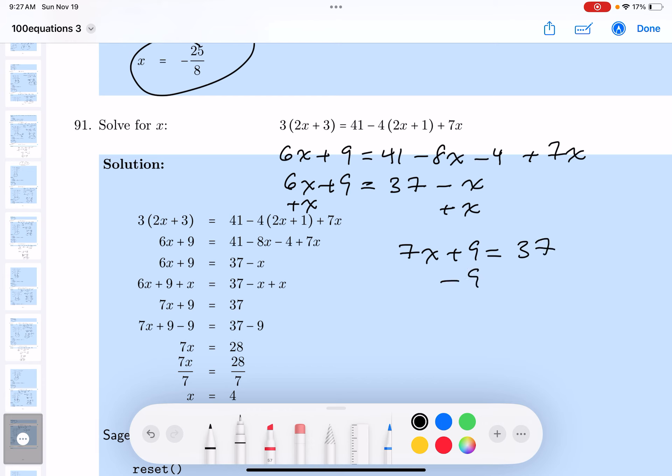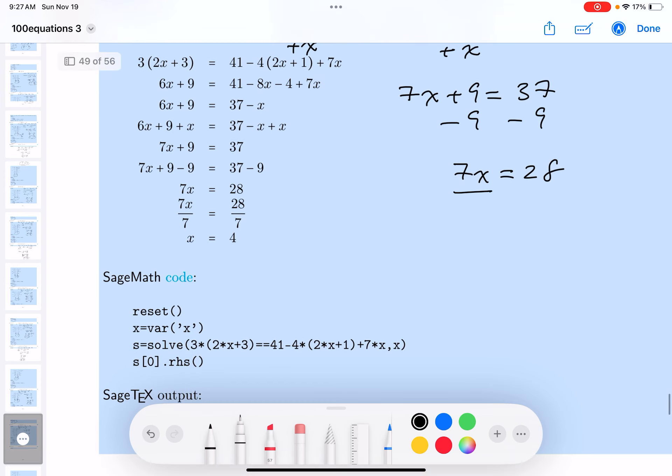Subtract 9 from both sides, and you get 7x equals 28. What do you do now? Divide both sides by 7, and you get x equals 4.